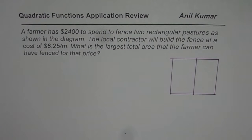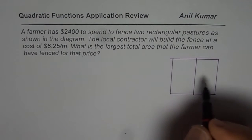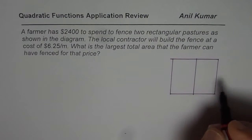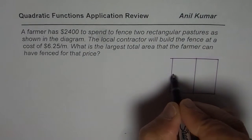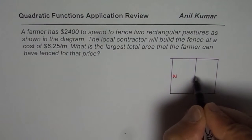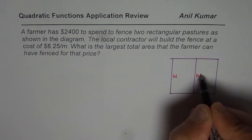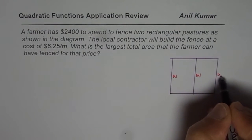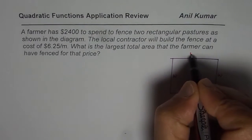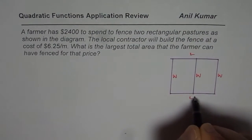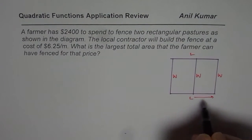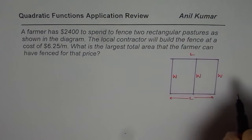In these kinds of problems, we should first define the variables. We have a sketch here. Let us say that the width of this fence is W. And the length is L — the complete length.